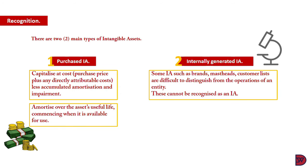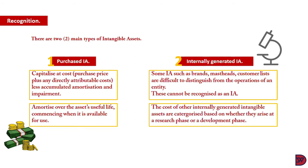The cost of generating some intangible assets internally, such as brands, masthead, and customer lists, is often difficult to distinguish from the cost of maintaining or enhancing the entity's operation. Therefore, we cannot recognize such intangible items as an intangible asset — we expense it in the profit or loss account. Other costs of generating internally generated intangible assets are classified based on whether they arise at the research phase or the development phase.